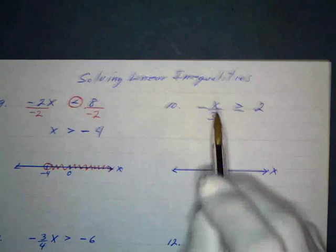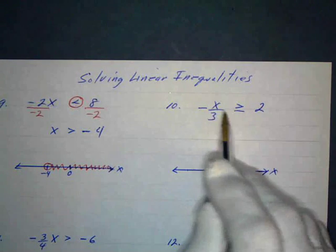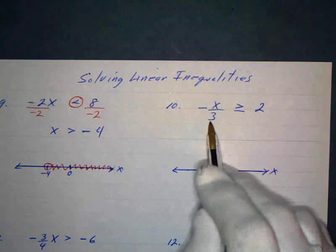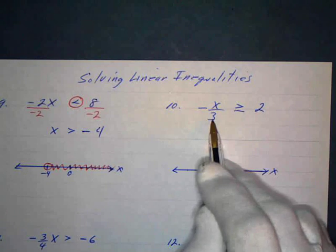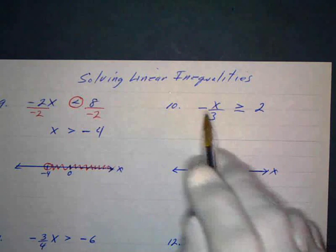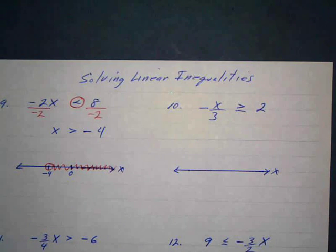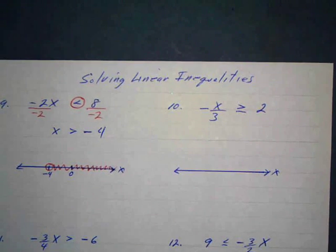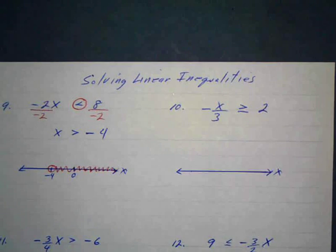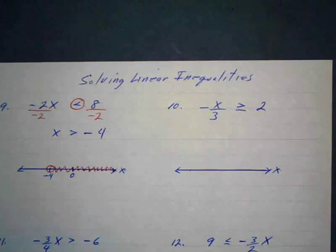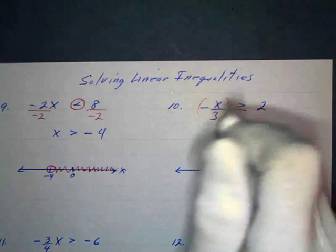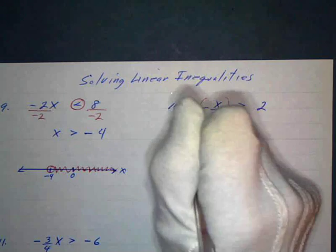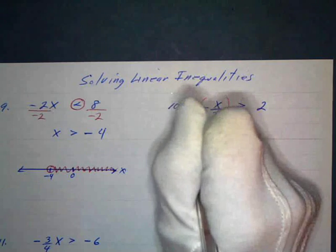In this next example, I've got x divided by negative 3. I want to get rid of the negative and the 3, so I'll multiply both sides by negative 3. I'll put parentheses around it so I don't confuse it with addition, and put a negative 3 out in front.